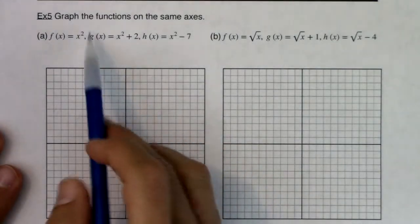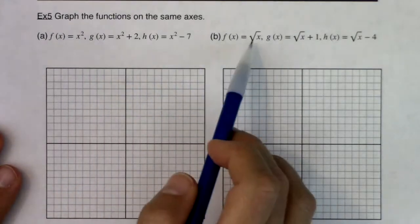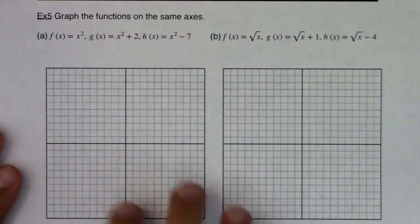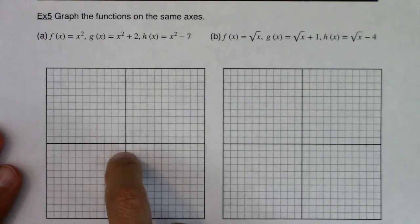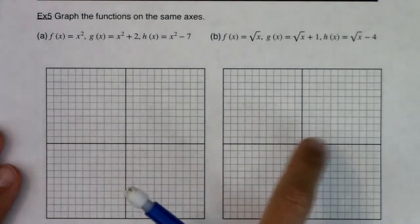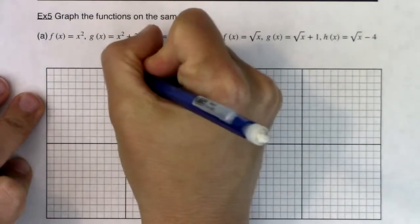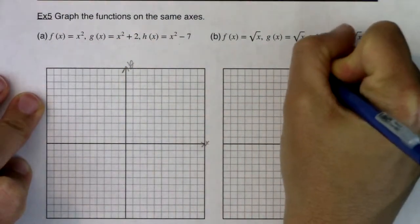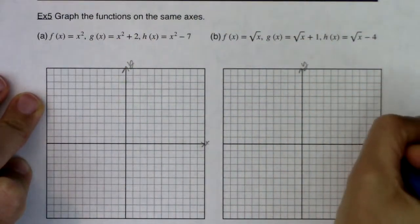Alright, so I want to graph my toolkit functions. I'm going to actually do both toolkits right now. And then we'll talk about how they're going to shift. So let me get my x squared function on this coordinate system and my square root function on this coordinate system. So give me a moment. I'm going to label and scale my axes.